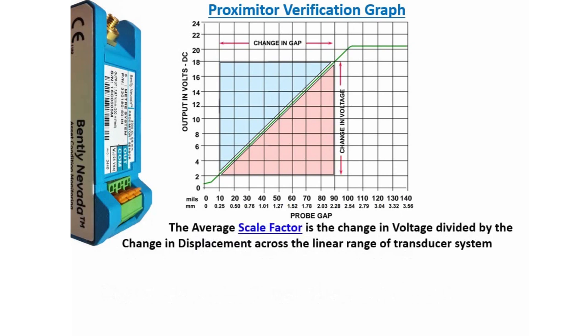Therefore, for a proximity displacement system, the average scale factor is the change in voltage divided by the change in displacement across the linear range of transducer system. The linear range of 8 mm proximeter system is 0.254 millimeters to 2.286 millimeters.